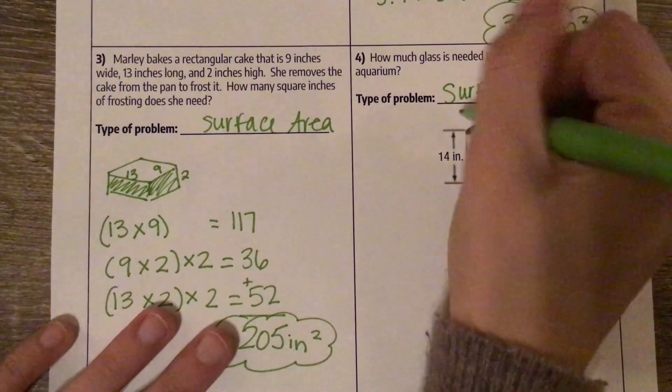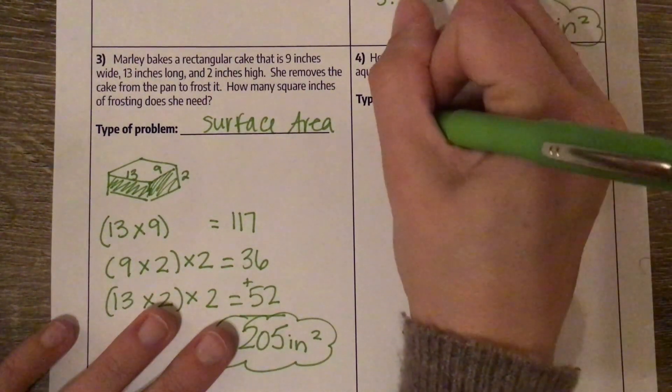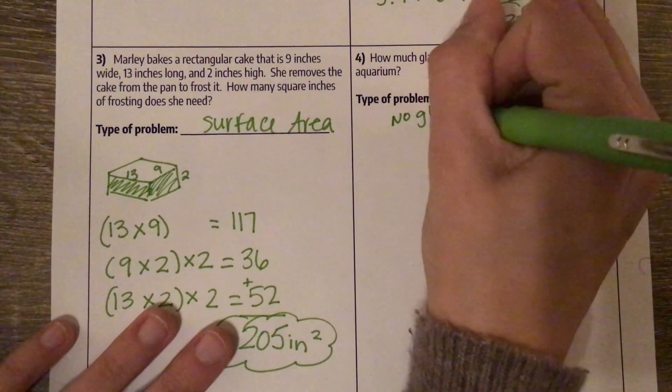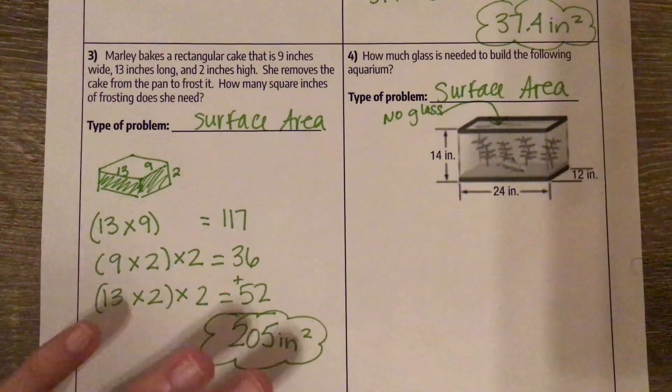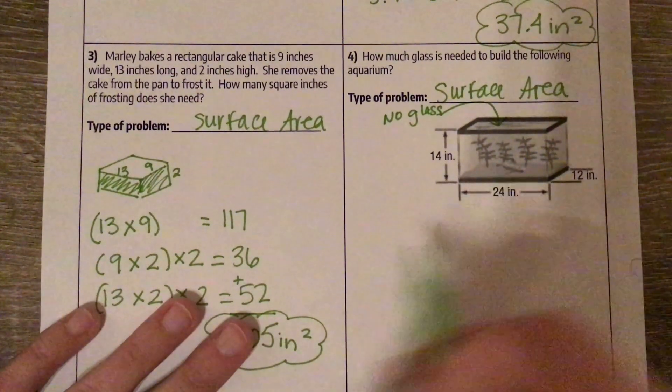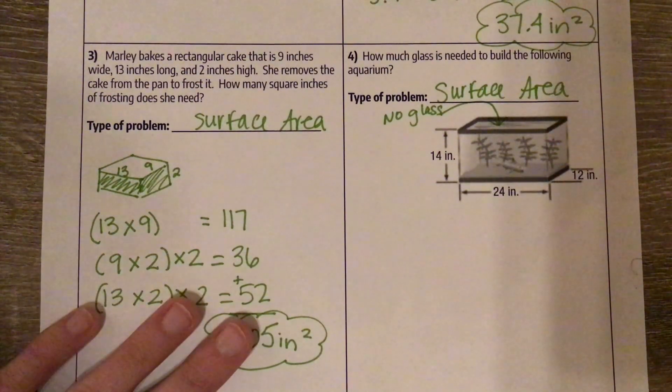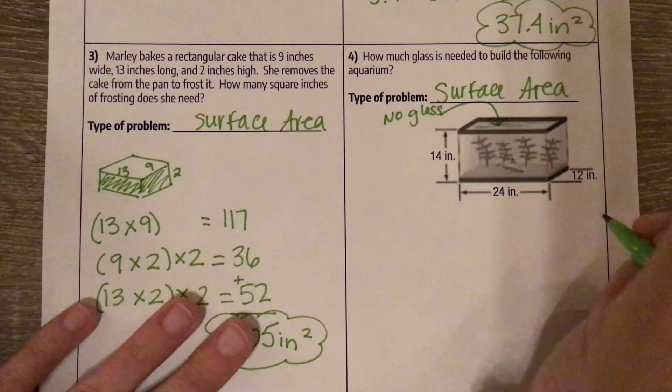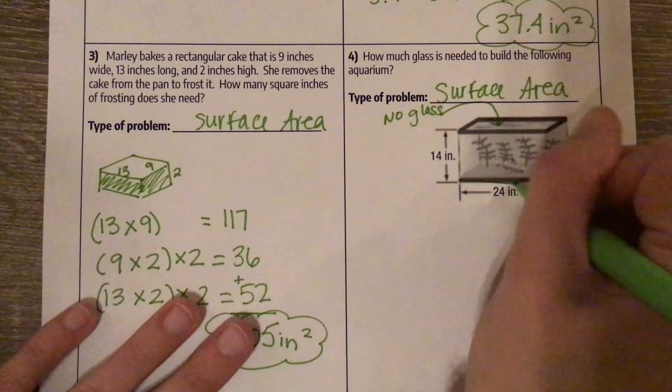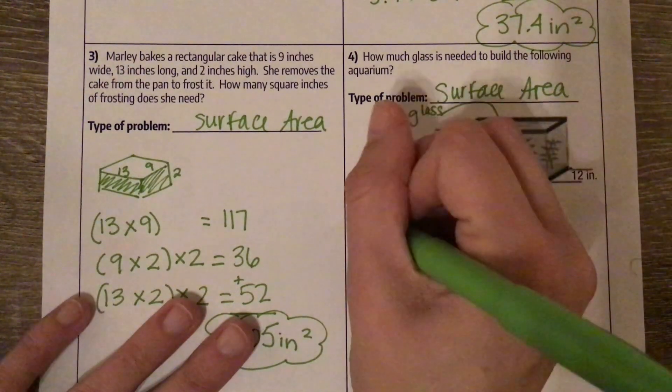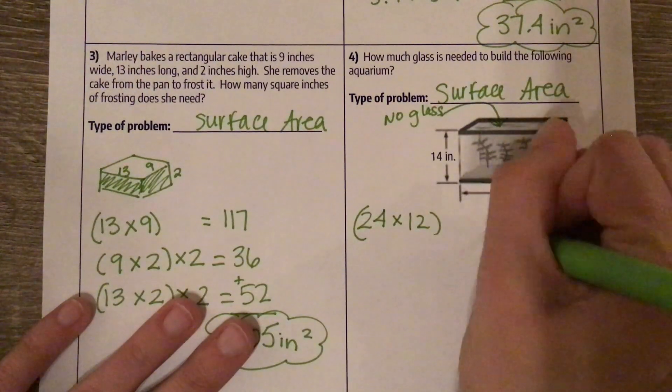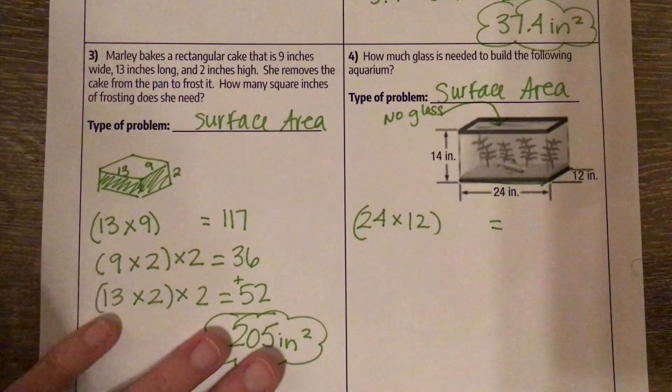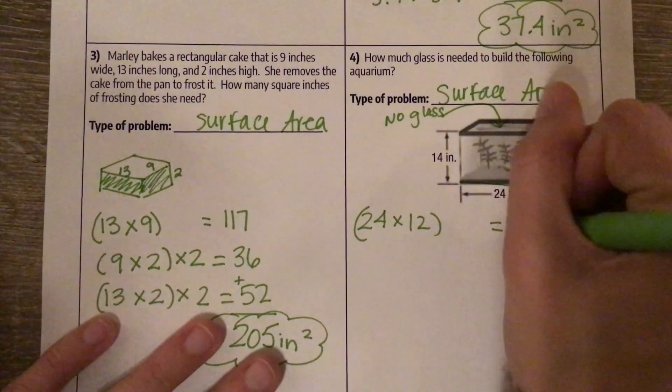What is important to note is that no glass is needed on the top, but we do need the rest. Though we don't need glass on the top, we do need it on the bottom. So that dimension is 24 by 12. We're only doing it once, though, because we don't want the top filled with glass. So 288.